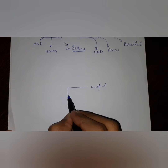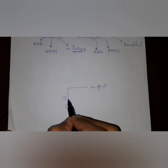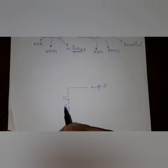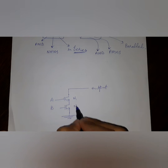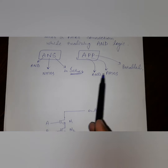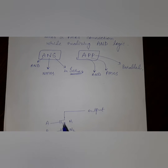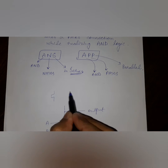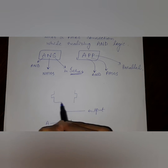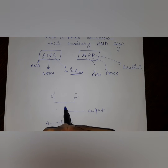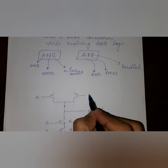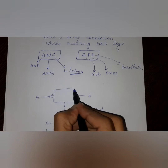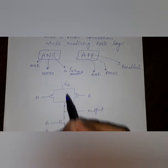According to the trick word ANS, we have to connect the NMOS in series. Here I am considering two inputs A and B, so N1 and N2 are the NMOS. Then from the trick word APP, we have to connect the PMOS in parallel. So these are the two PMOS, here's the power supply, and we connect the output.